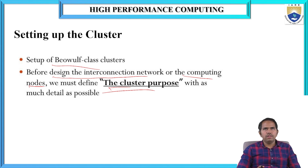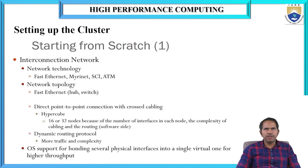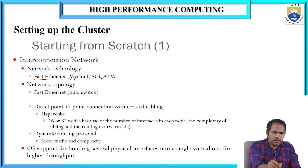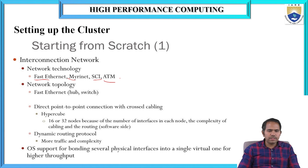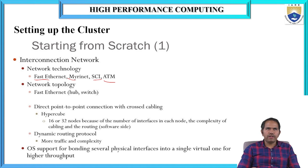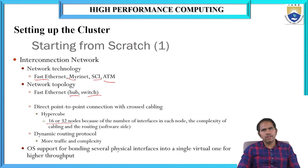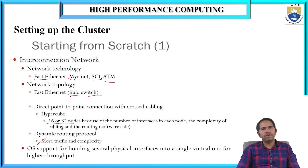The aim should be clear. See an interconnection network — how to design the interconnection network and computing networks. The interconnection networks have to be a combination with different network technologies: Fast Ethernet, Miranet, SCI — Scalable Computing Interfaces, Scalable Coherent Interface, and ATM. These are all fast networks supporting the network technology. We have to choose with a different network topology also — either switches or direct point-to-point connection with a crossroad cable, and hypercube, which contains 16 or 32 nodes, and dynamic routing protocols, which produce more traffic and complexity.